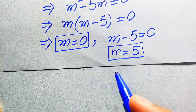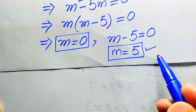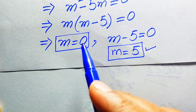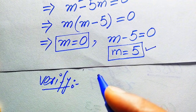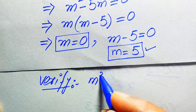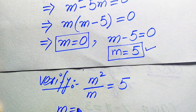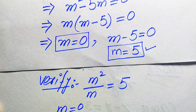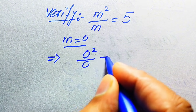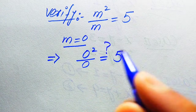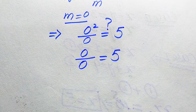We already verified that m equals 5 is a valid solution in the first method. Now we verify m equals 0 by substituting into the original equation: 0 squared divided by 0 equals 5? This gives 0 over 0, which is an indeterminate form.